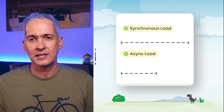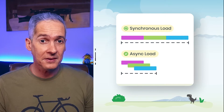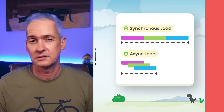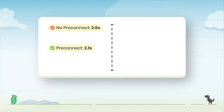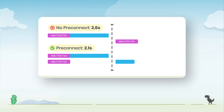First, in AMP, all resources are loaded asynchronously. This means that AMP pages are designed to never block while loading resources. Second, AMP makes extensive use of the pre-connect API, which allows browsers to set up early connections before HTTP requests are actually sent to the server, cutting quite a bit of the round-trip latency usually incurred when setting those connections.